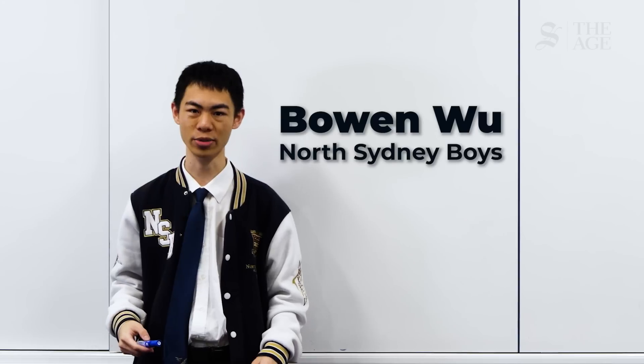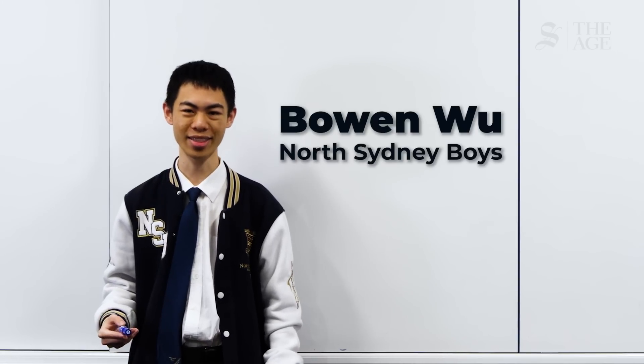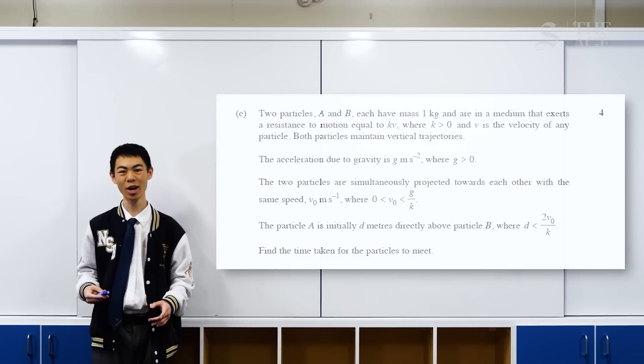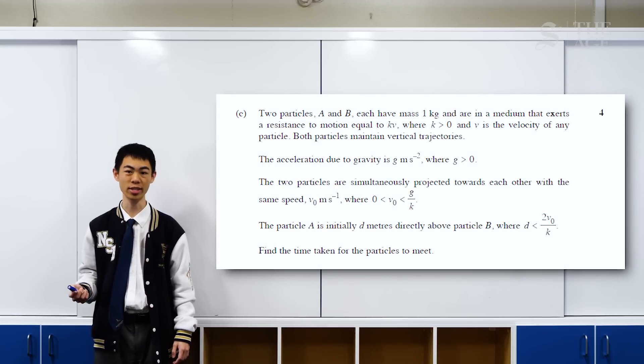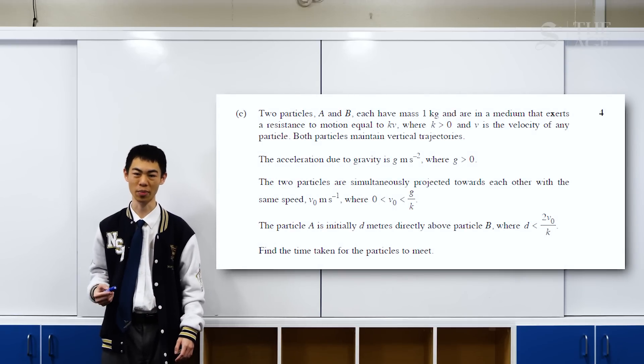Hello everyone, my name is Bowen Wu and I'm from North Sydney Boys High School. Today I just did the Math Extension 2 paper. Overall the difficulty of the paper was alright, but there were some pretty tricky ones that made you think in new or creative ways. Today I'll be going through Question 16c, which is the hardest last question from the paper.